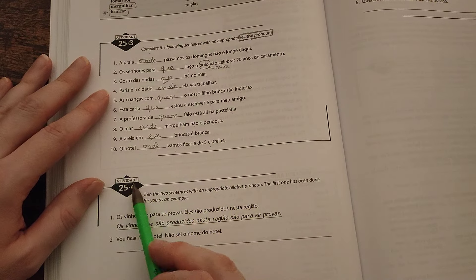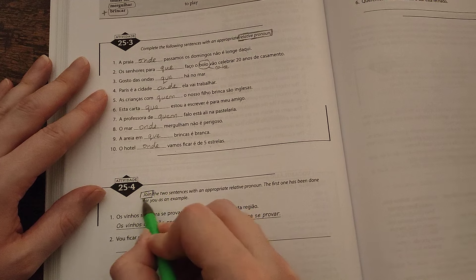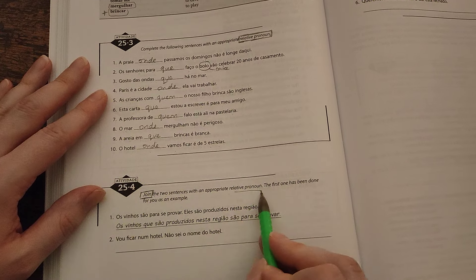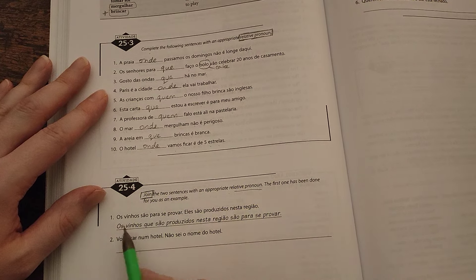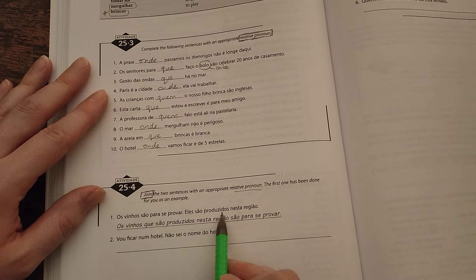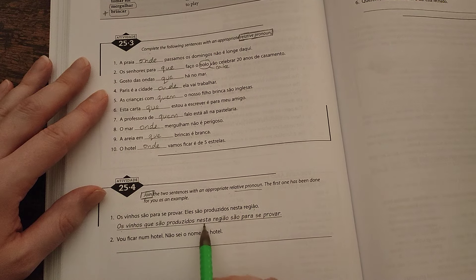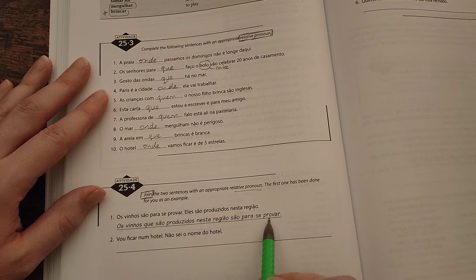Ok, última atividade. Join the two sentences with an appropriate relative pronoun. The first one has been done for you. Os vinhos são para se provar. Eles são produzidos nesta região. Os vinhos que são produzidos nesta região são para se provar.